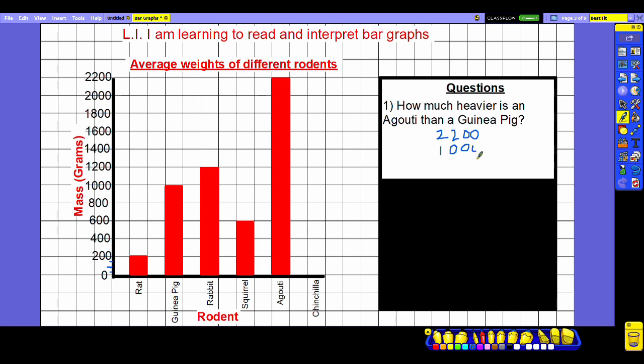To work out the difference between them we subtract them and the answer that we would get would be 1200 grams. So how much heavier is an agouti than a guinea pig? 1200 grams.